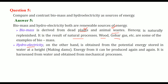Hydroelectricity works because water at a height has potential energy. When water drops from a height, potential energy converts to kinetic energy, which can be used to rotate turbines. Dams can be built, and energy can be produced again and again because water keeps coming from melting glaciers. Hydroelectricity is harnessed from water through mechanical processes.